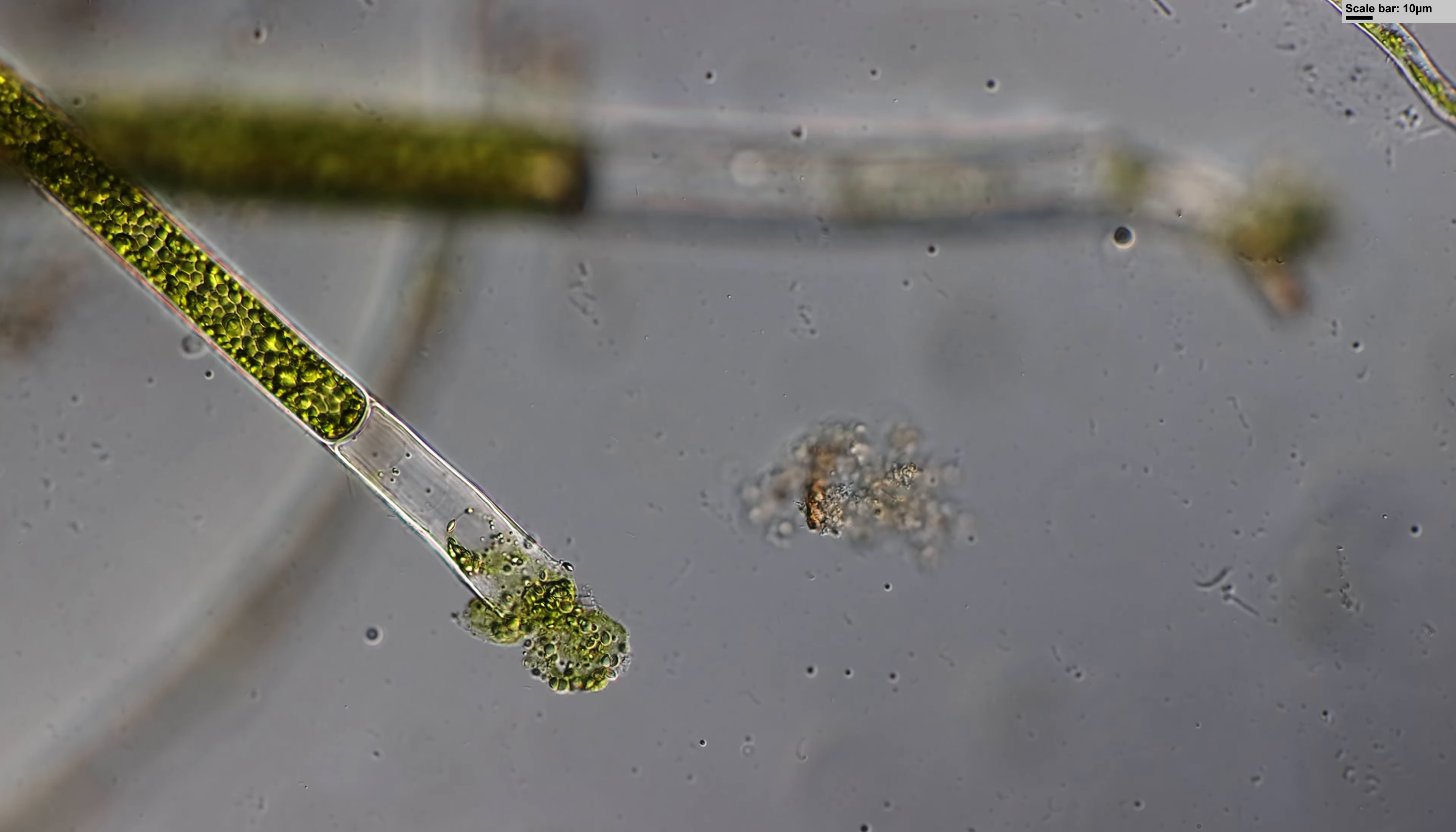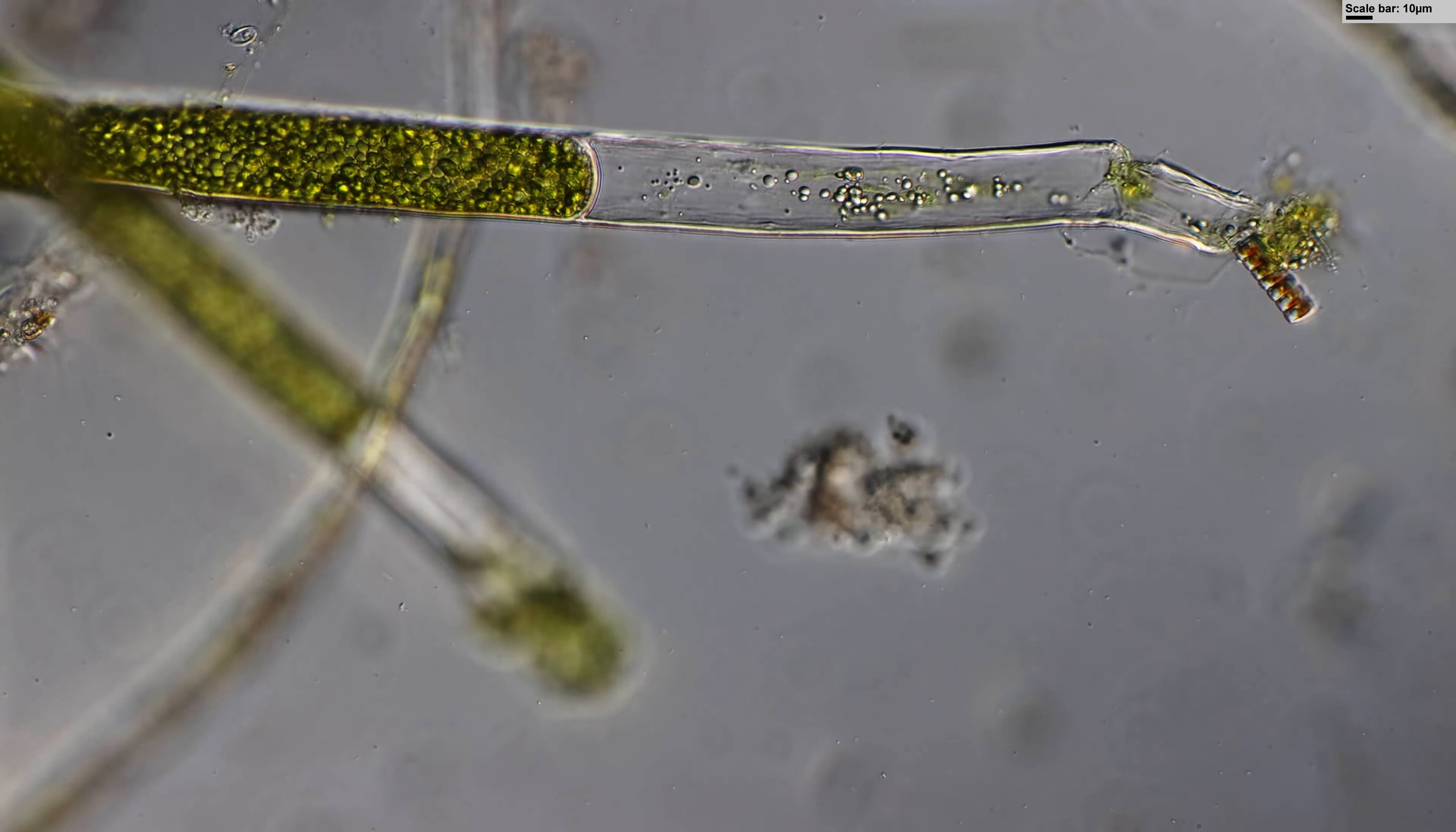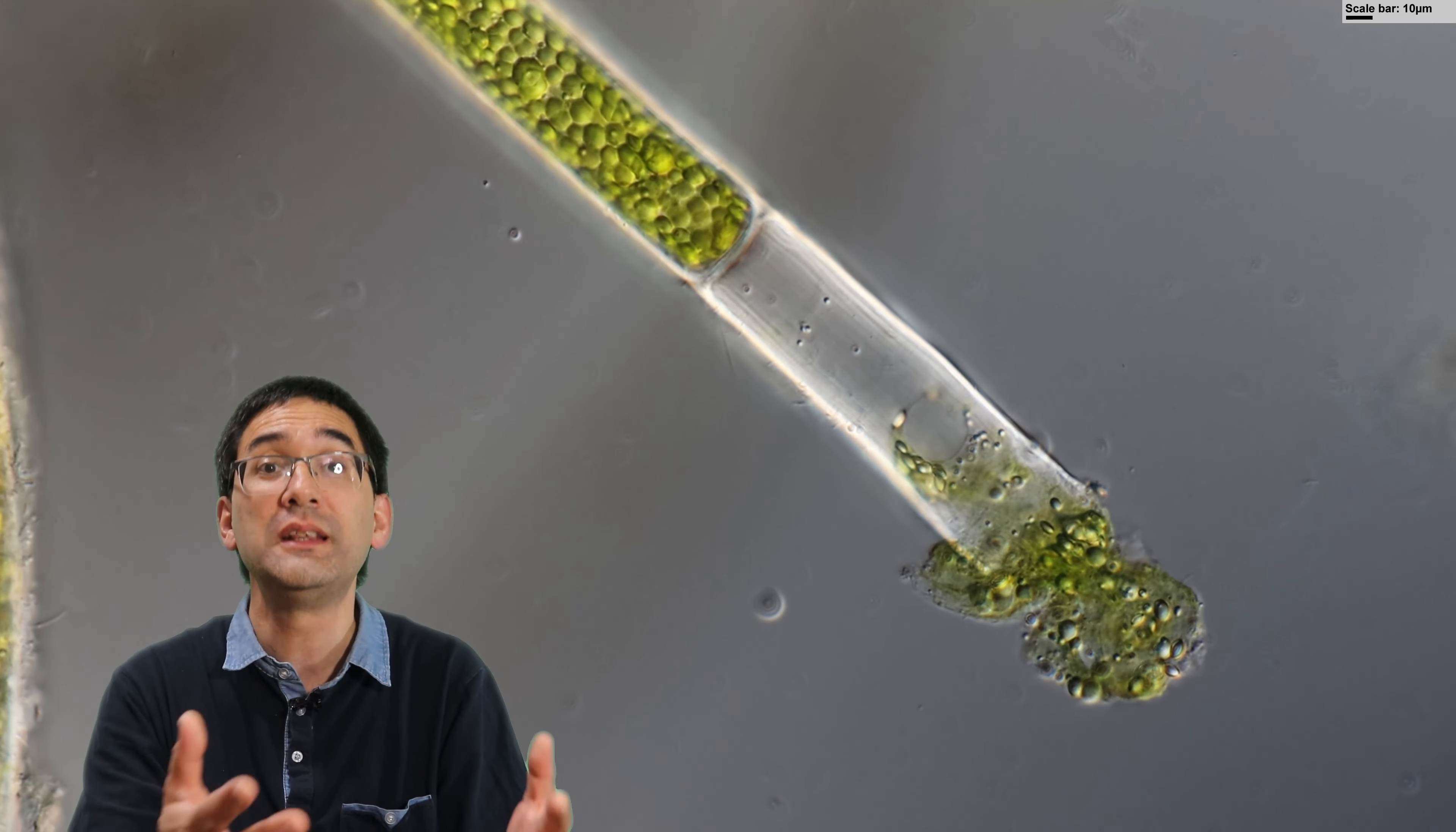For example, if there are runoffs of water from agricultural fields and so on, they collect in the pond, and then this promotes the growth of these algae and ultimately also the death of the pond.